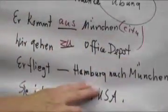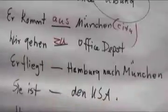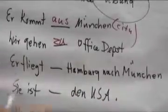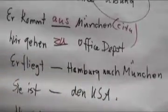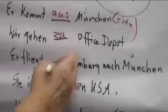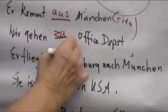Er fliegt ___ Hamburg nach München. Here we have two cities. Hamburg is the point of departure, so you say von Hamburg.